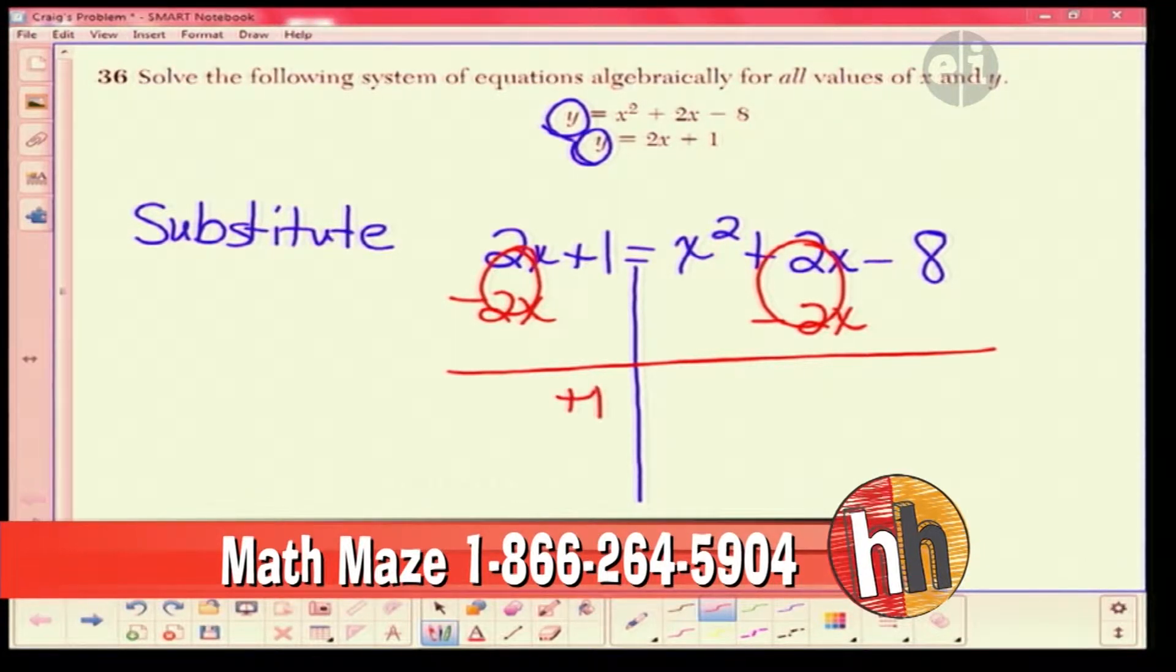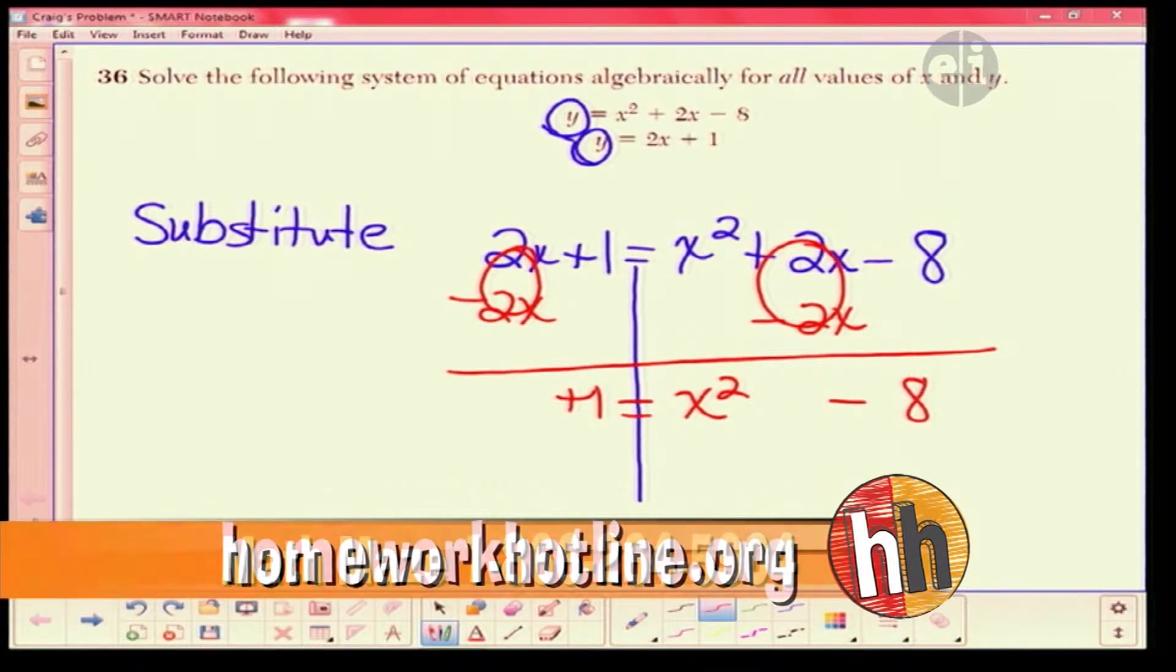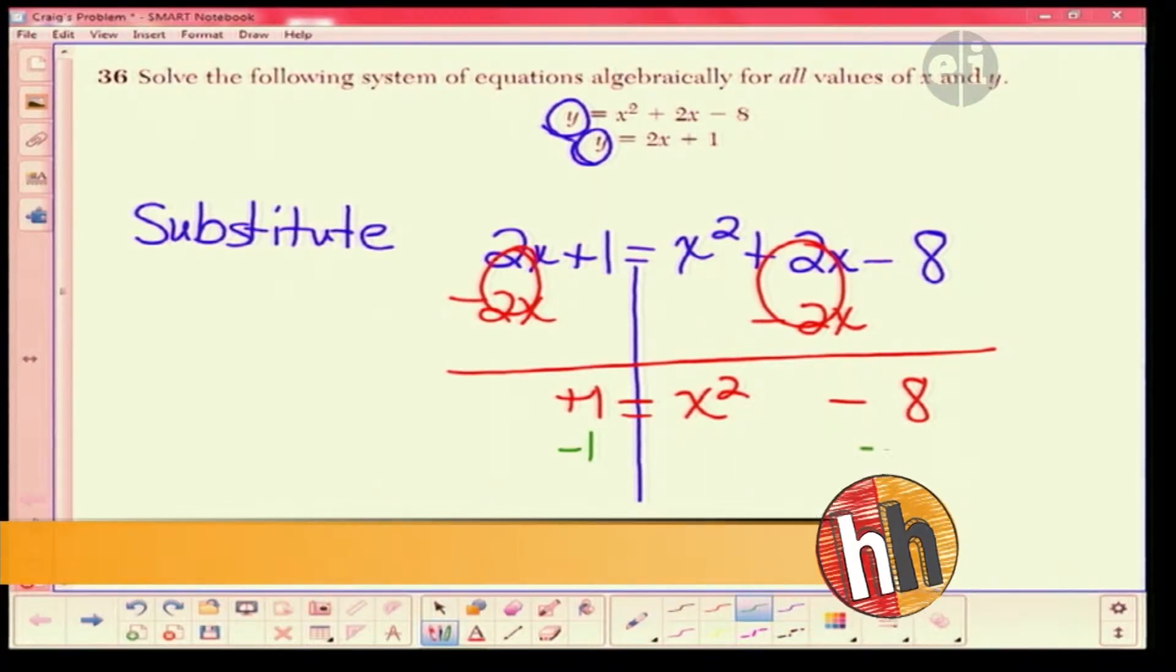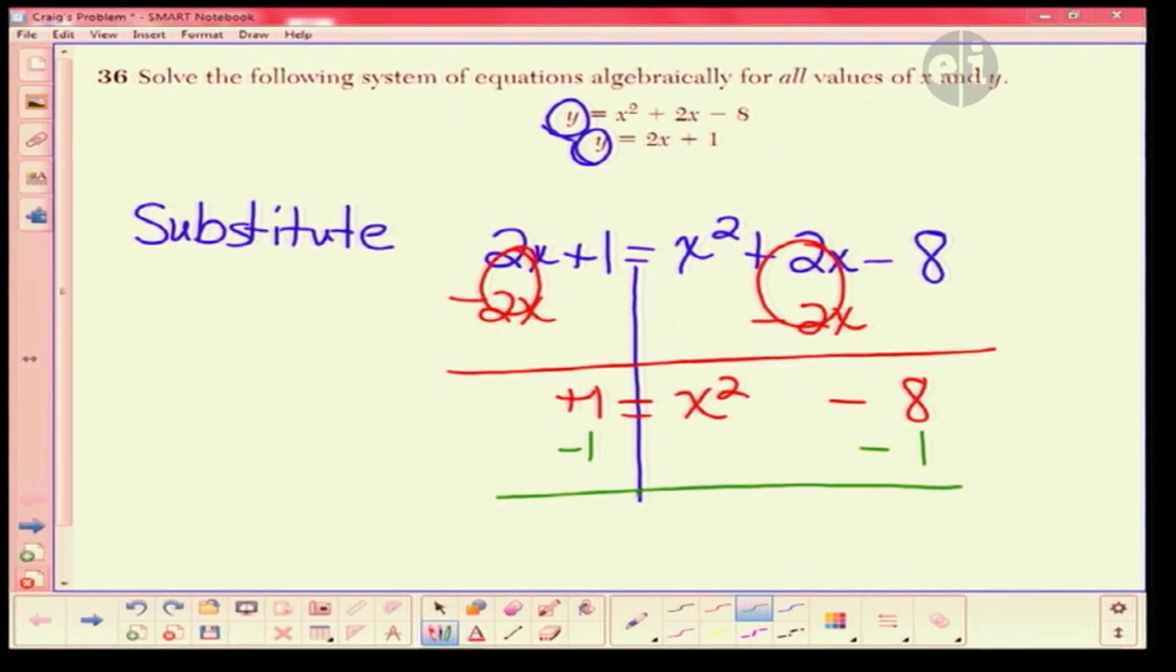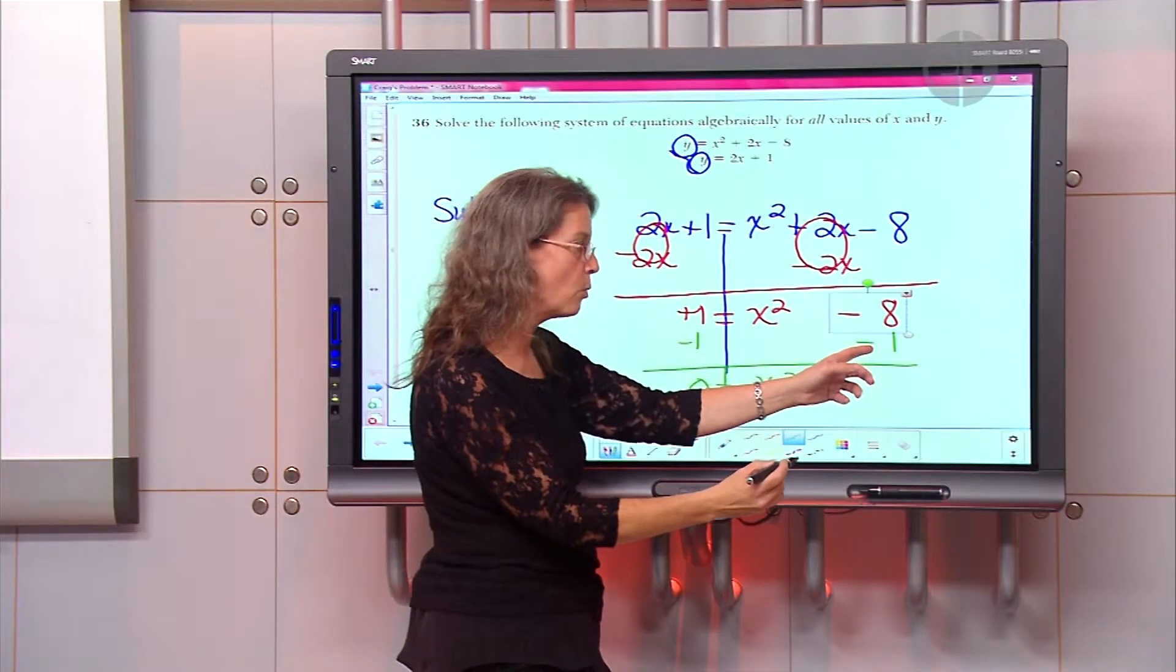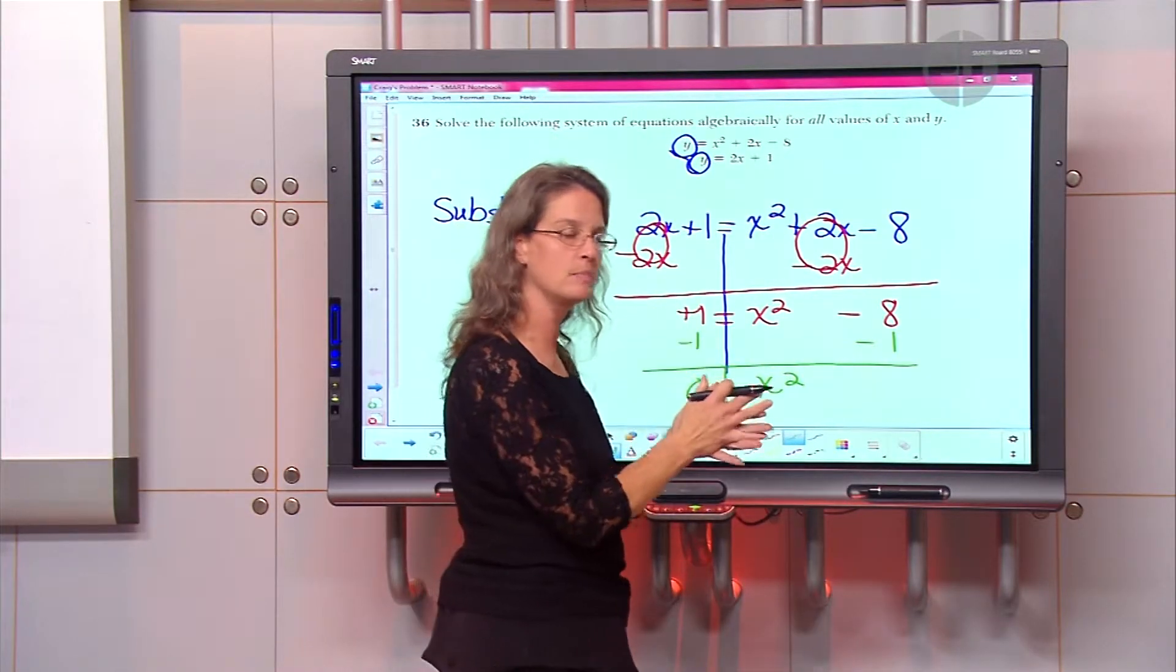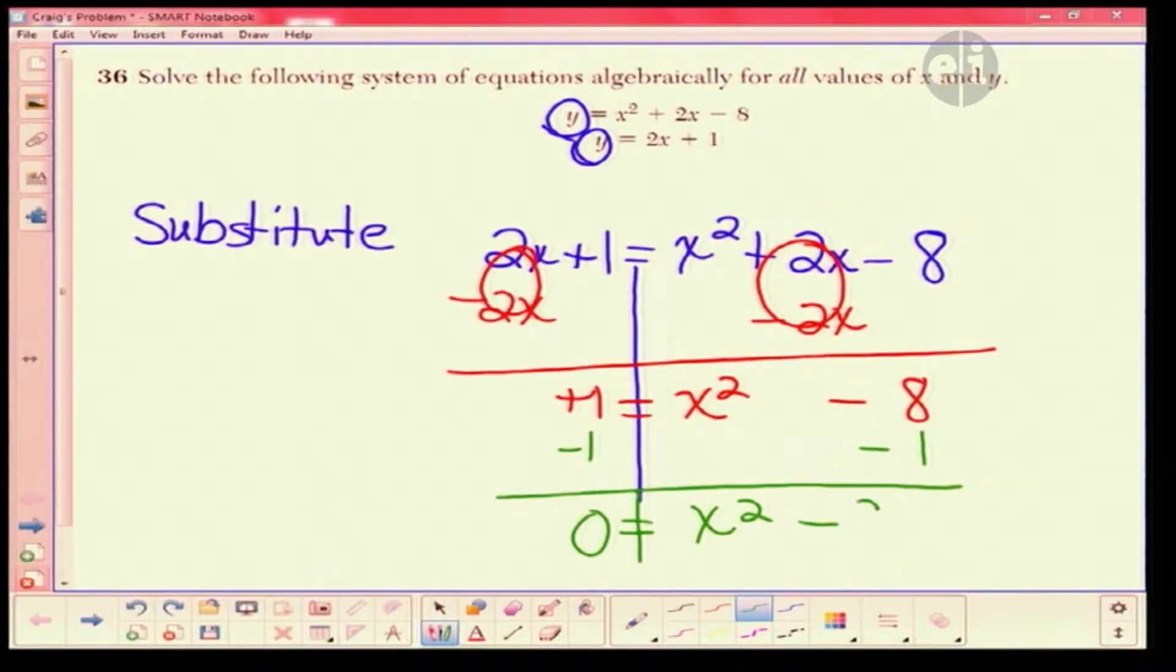So I have a plus 1 is equal to x squared minus 8. Well now I have to change and move this 1 over, so I'm going to take away the 1. And I have 0 is equal to x squared, a negative 8 plus, or minus 1 is a negative 9. Same sign, got to put them together. So minus 9.